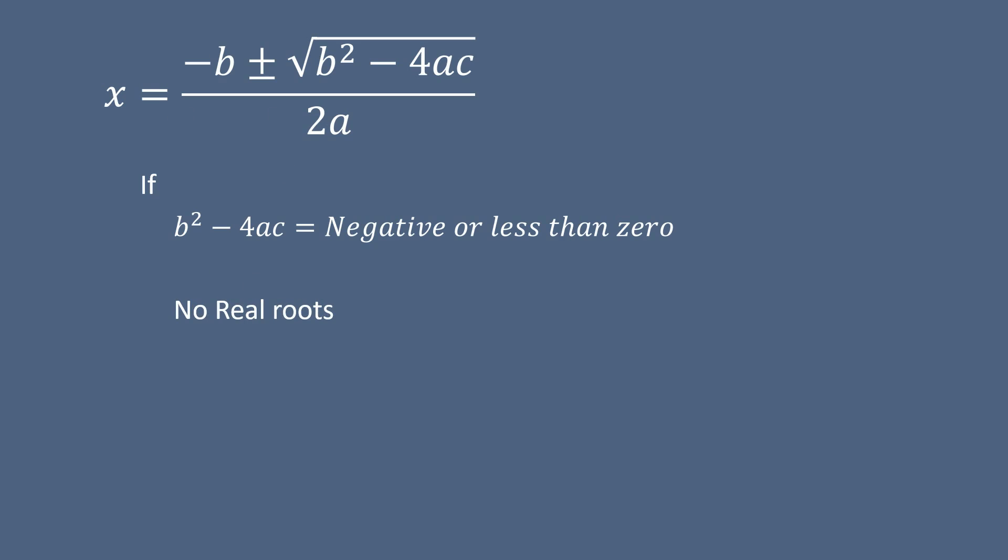Based on what we have studied earlier, x² + 1 = 0 will not have any real roots as the value of the discriminant is negative. Since the square root of -1 did not exist for us, we said that there is no solution for the equation x² + 1 = 0.